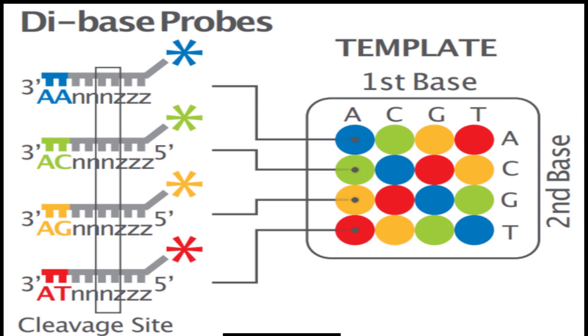The scientists perform multiple cycles of ligation, detection, and cleavage to determine the length of the read. The sequencing involves detection and removal of fluorochrome.